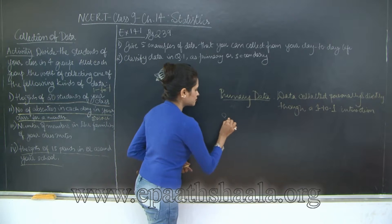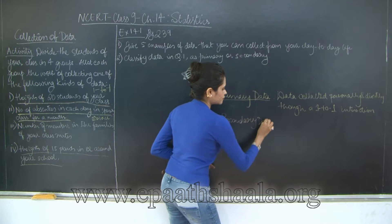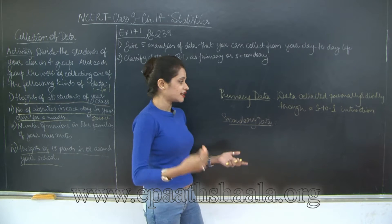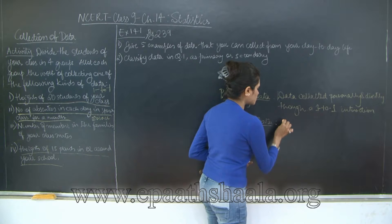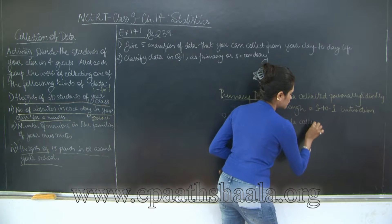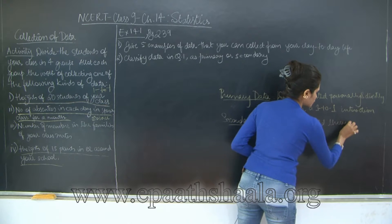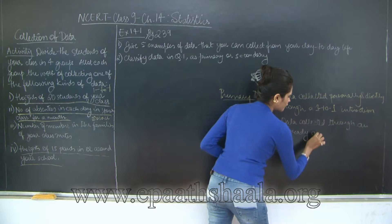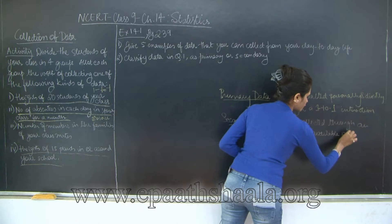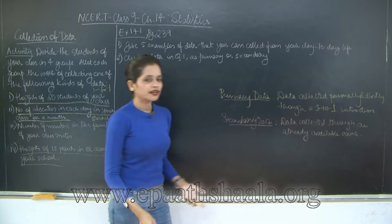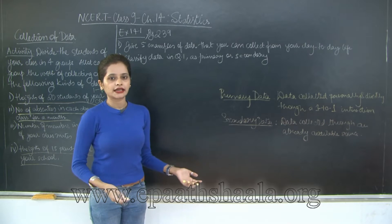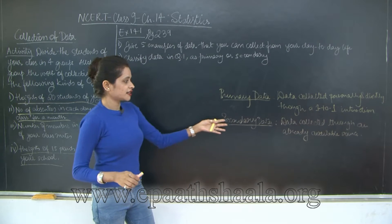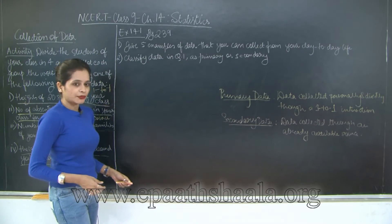Now what about secondary data? Secondary data is obviously going to be the opposite. Secondary data is nothing but where a third person is involved or it's indirect where the collection of data is indirect. So it will be through some source. Data collected through an already available source. Source here could be a register or another person or anything else, it could even be the internet. So this was about collection of data and the two types of data - it could be either primary or secondary.